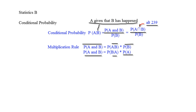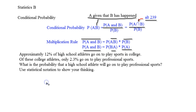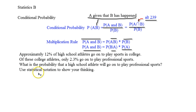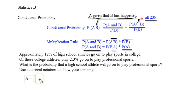Now what we're going to do is talk about a situation where this actually happens. Approximately 12% of high school athletes go on to play sports in college. Of these college athletes, only 2.3% go on to play professional sports. What is the probability that a high school athlete will go on to play professional sports? Use statistical notation to show your thinking.